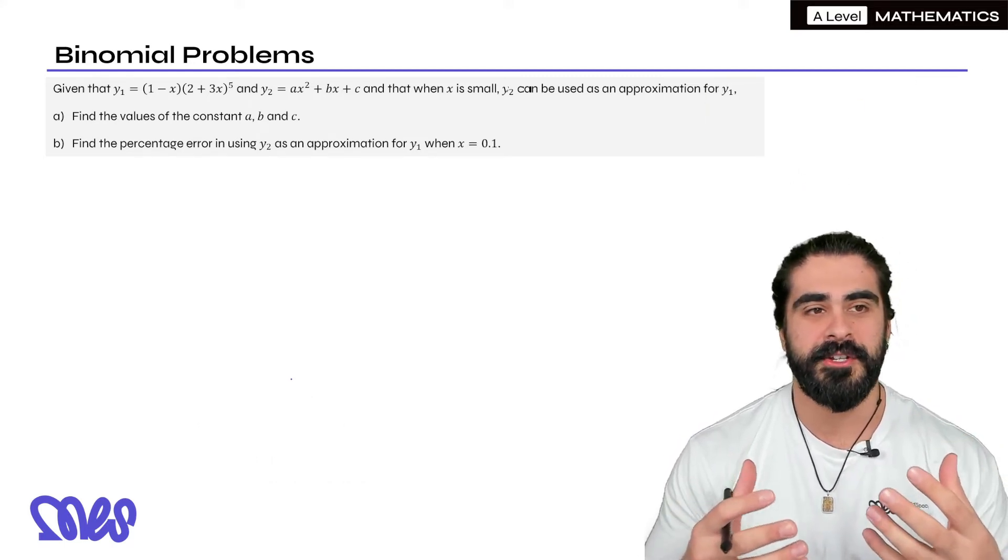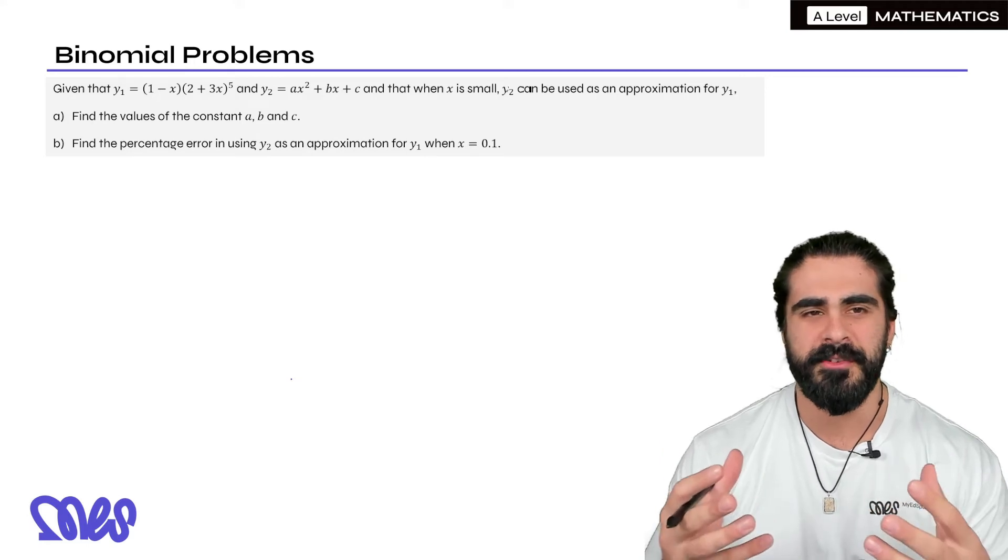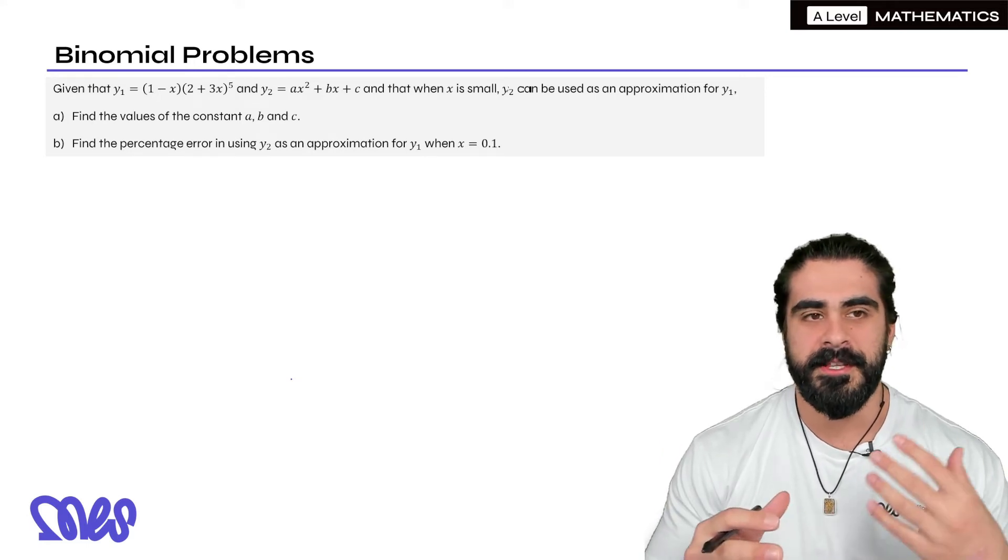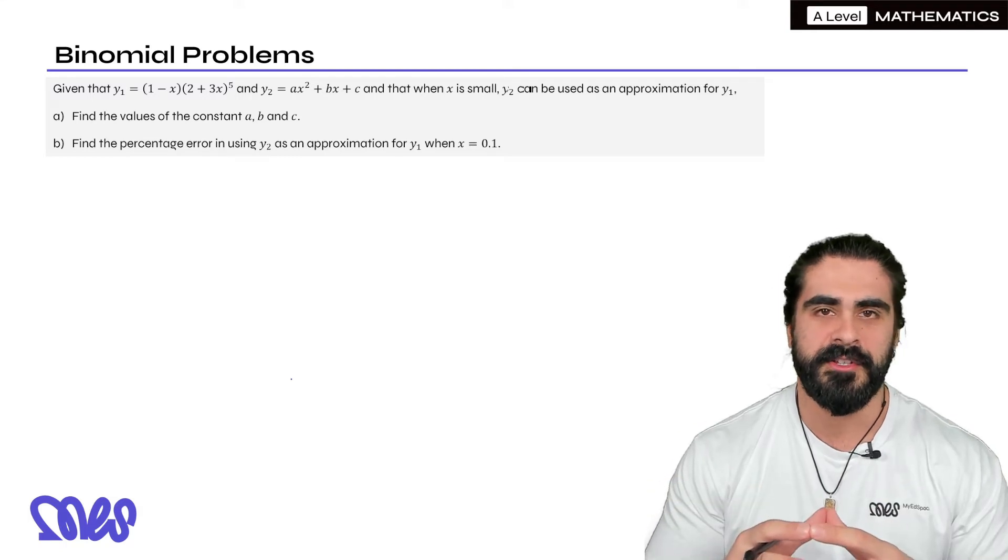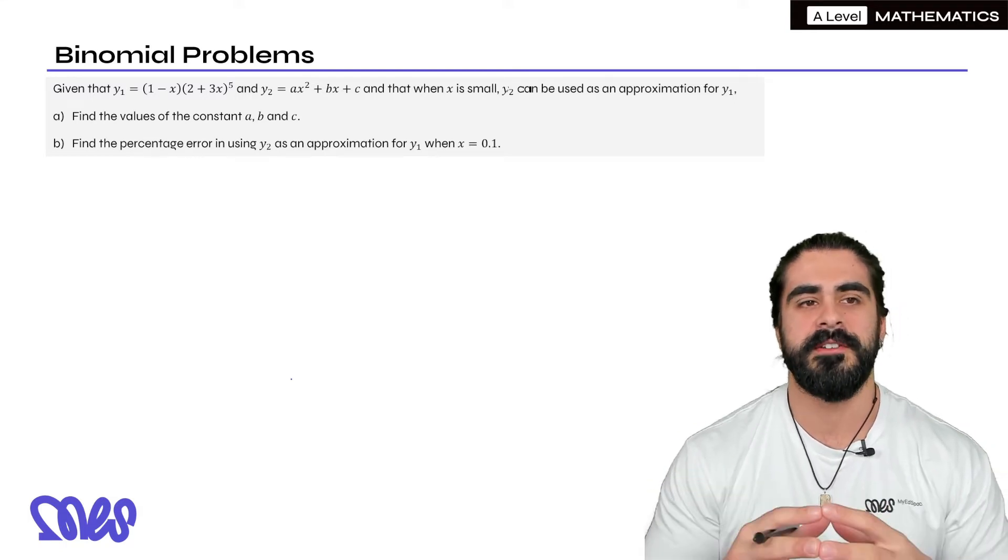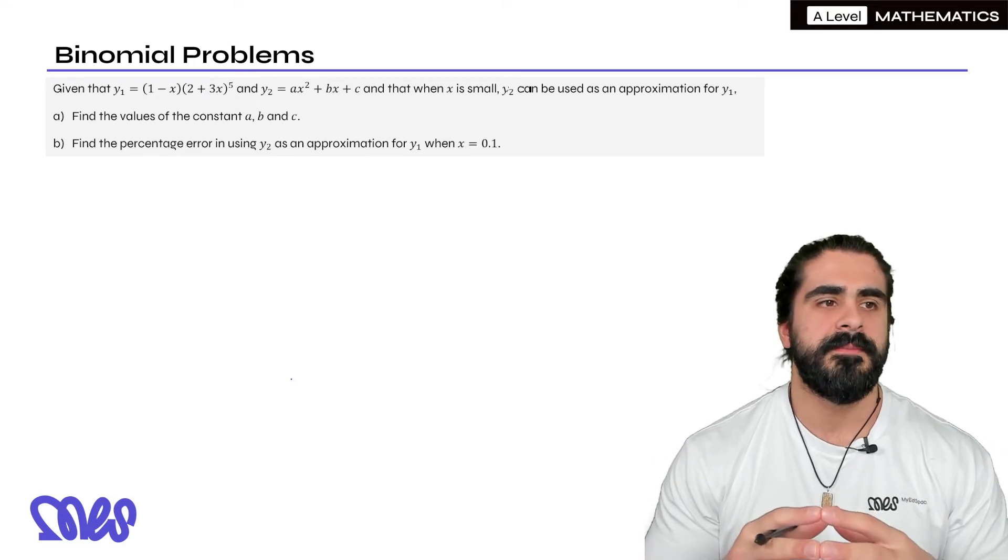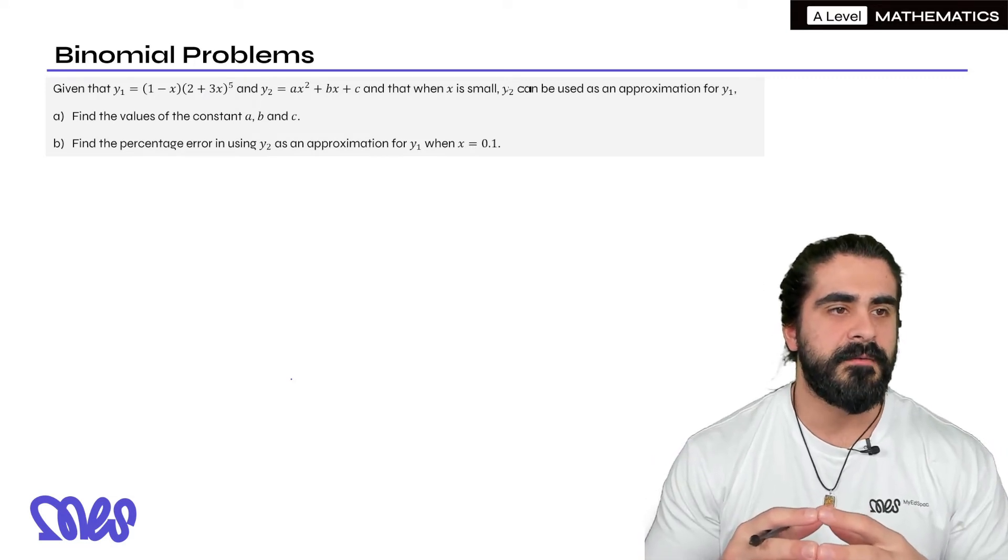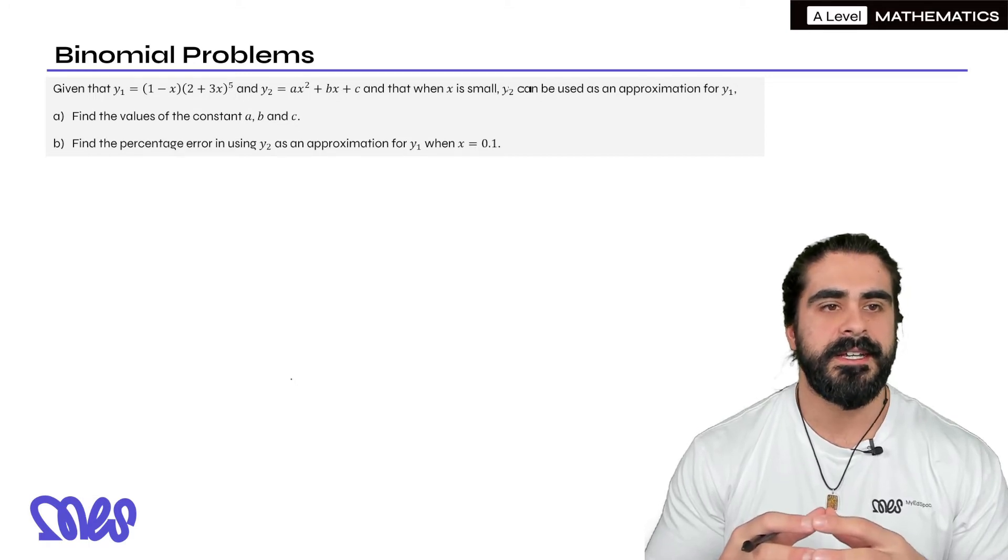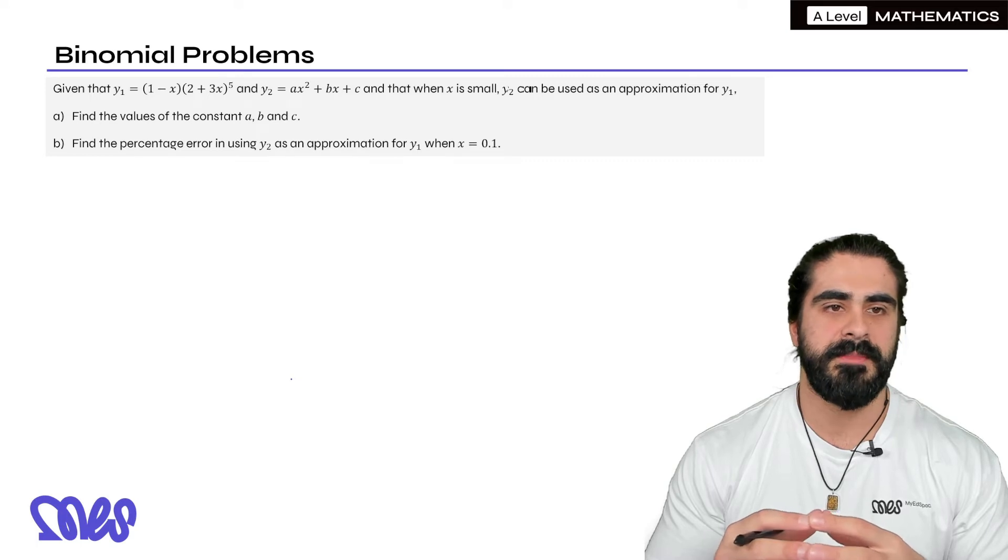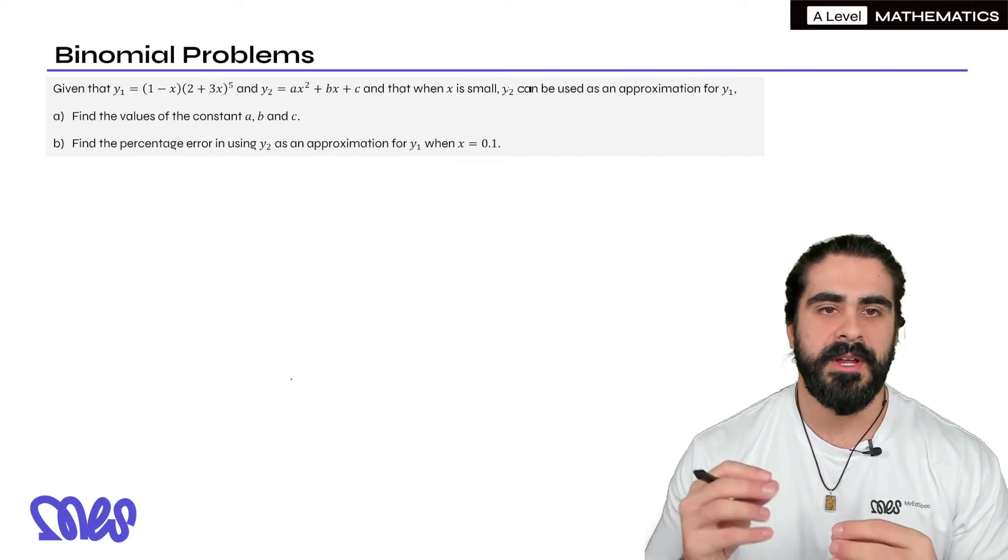Now when the binomial expansion gets much more difficult, generally they like you to expand up to the x squared term and then sometimes they ask you to find the coefficient of x cubed as well. But the general trend is that they don't make you expand too much. So here it says given that the function y1 is (1 - x)(2 + 3x)^5 and y2 is ax^2 + bx + c, and that when x is small